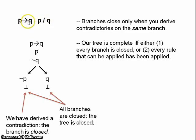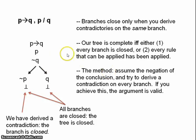As I say, no surprises there. So, we have a very, very simple method for testing validity. We assume the negation of the conclusion, and we try to derive a contradiction on every branch. If you derive a contradiction on every branch, then the argument is valid. A very simple method.